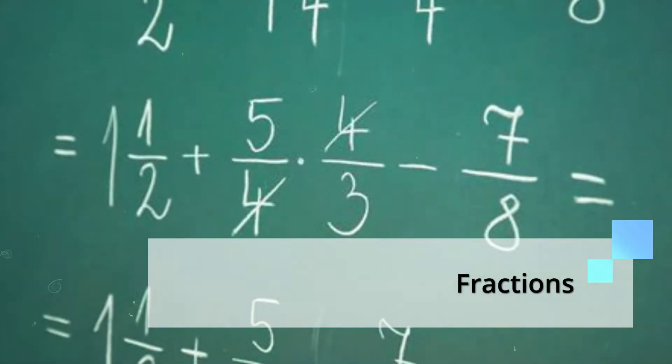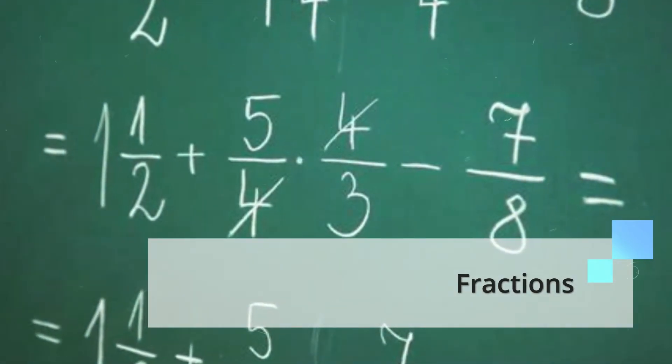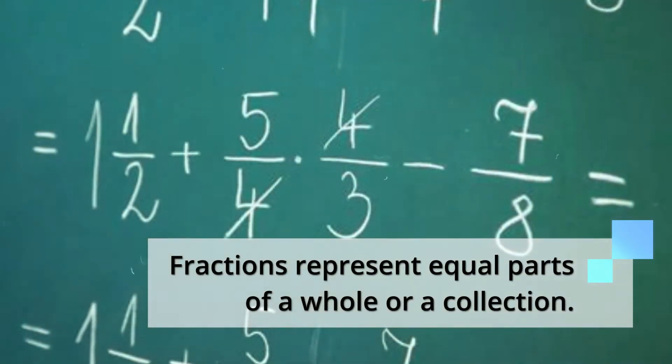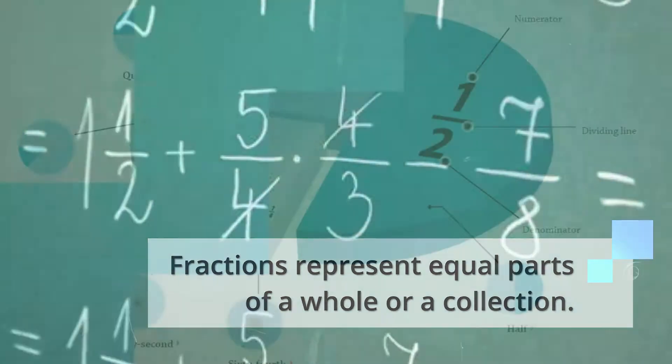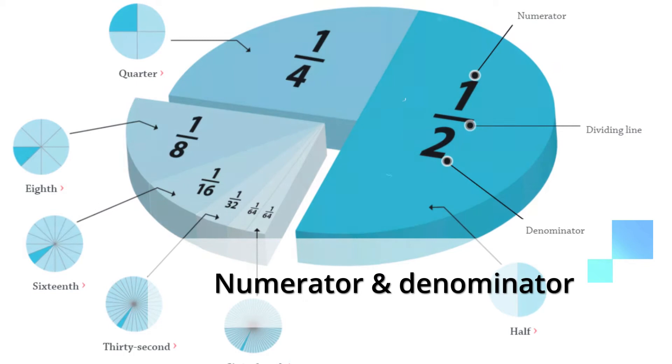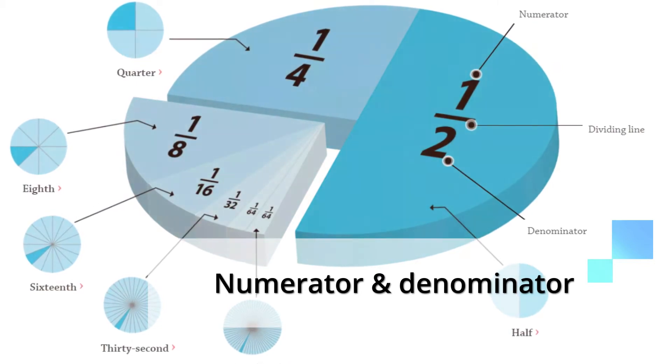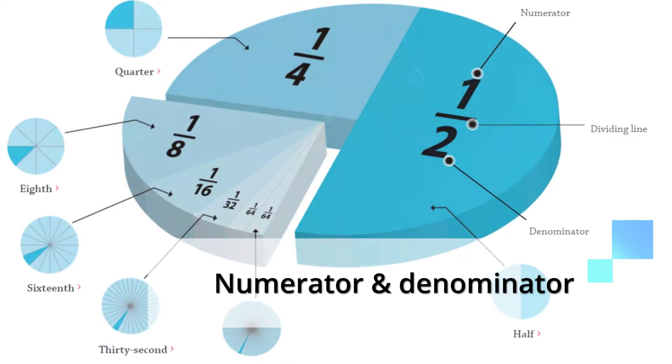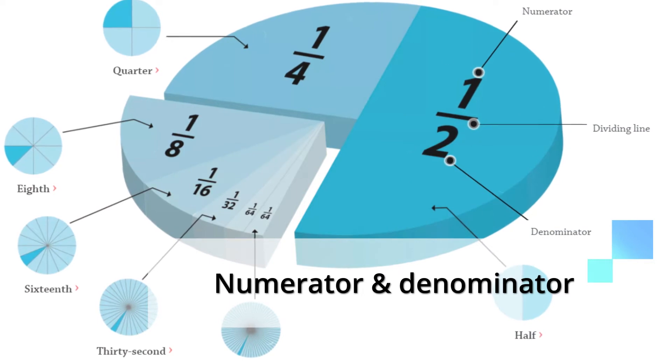Let's start with fractions. Fractions represent equal parts of a whole or a collection. In a fraction, you will find the numerator, which is on the top of the fraction, the dividing line, and the denominator, which is on the bottom of the fraction.